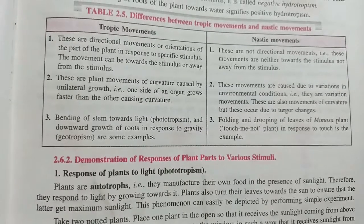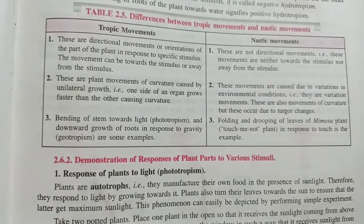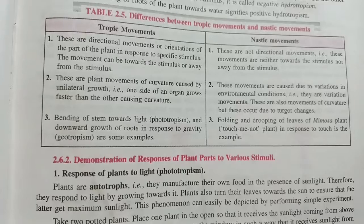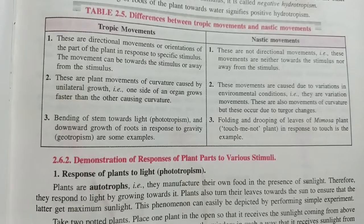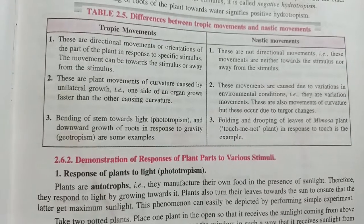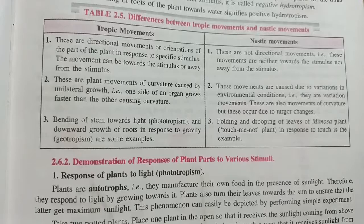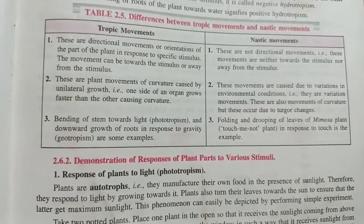Third point: the bending of stem toward light — phototropism — and downward growth of the root in response to gravity — geotropism — are examples of Tropic movements.